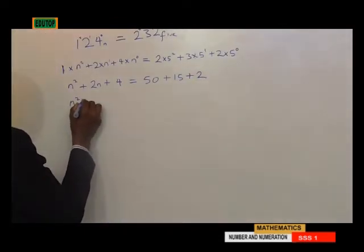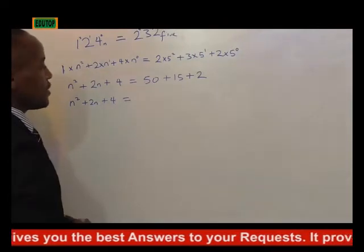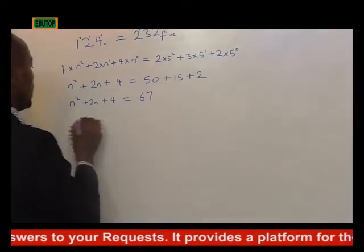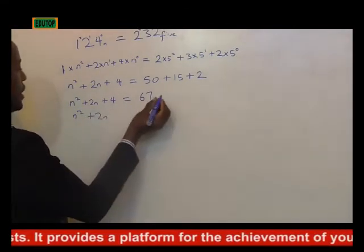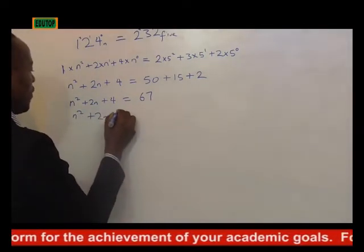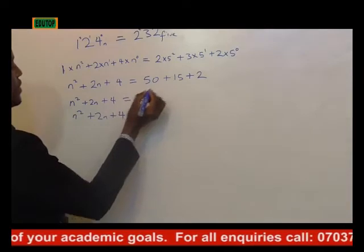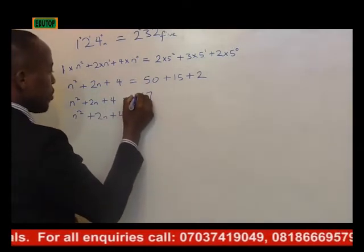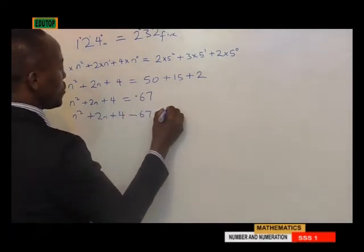So we now have n squared plus 2n plus 4 is equal to 50 plus 15 plus 2, which is 67. Now bringing 67 to the left hand side, the positive 67 becomes minus 67, giving us n squared plus 2n plus 4 minus 67 equals 0.